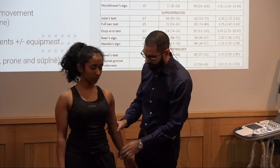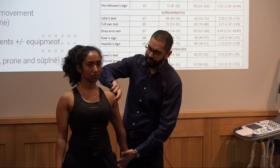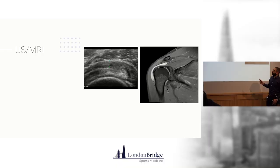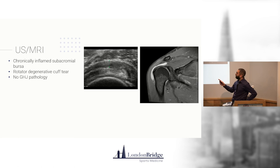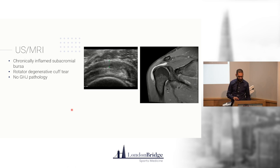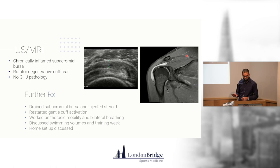Biceps testing — the Speed's test is essentially getting them to hold a straight arm and push up against resistance, activating the biceps tendon, working through different ranges. When we do our ultrasound in this case, we see a markedly inflamed subacromial bursa — the area is really thickened with lots of fluid in the subacromial space. This is the inflamed tendon showing lots of degenerative change in the rotator cuff. On MRI, all this white signal is fluid within the subacromial bursa.